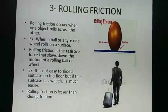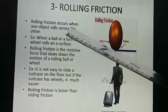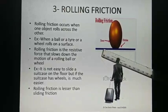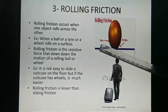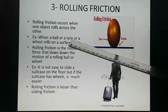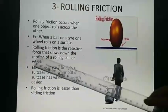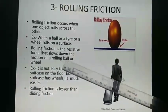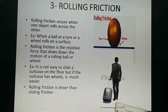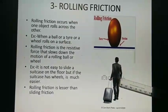The third type of friction is rolling friction. Rolling friction occurs when one object rolls across another. A ball rolling on a surface and a tire or wheel rolling on a surface are examples. Rolling friction is the resistive force that slows down the motion of a rolling ball or wheel. It is not easy to slide a suitcase on a floor, but if the suitcase has wheels, it becomes much easier to carry from one place to another.